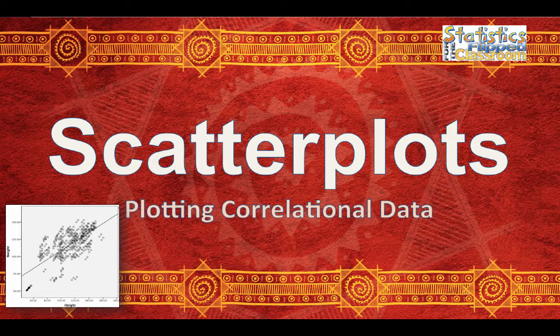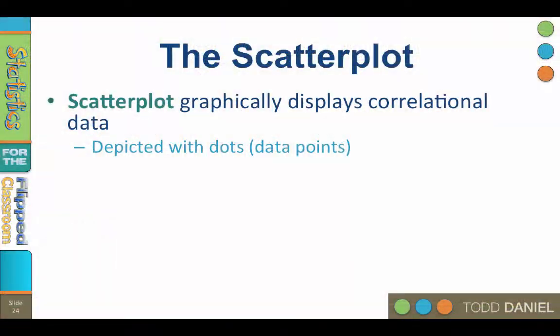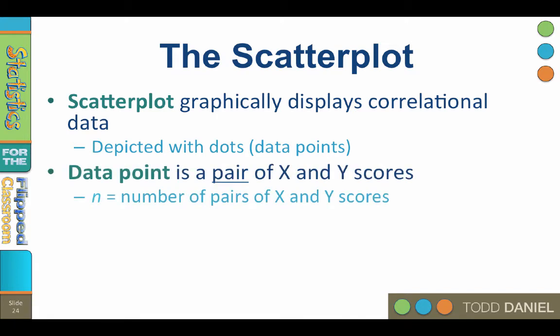Before we calculate a correlation to see if two variables are linearly related, it is a good idea to look at a picture of our data. We do this using a scatter plot. A scatter plot is used to graphically display correlational data. The relationship between the variables is depicted with dots called data points, and each data point is formed by a pair of x and y scores.